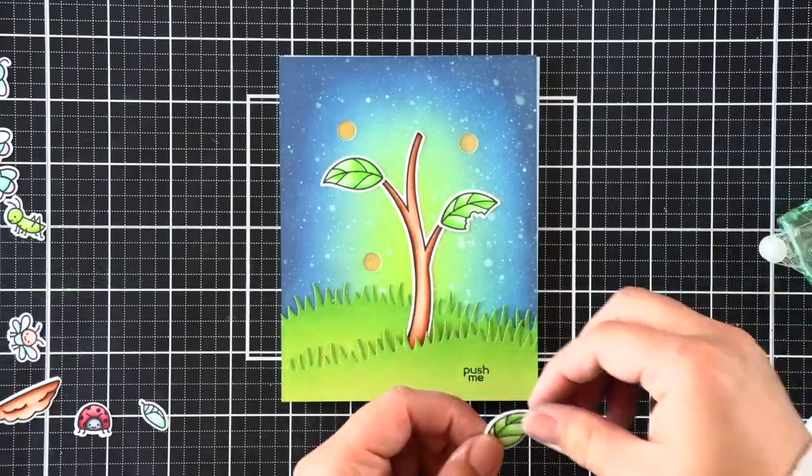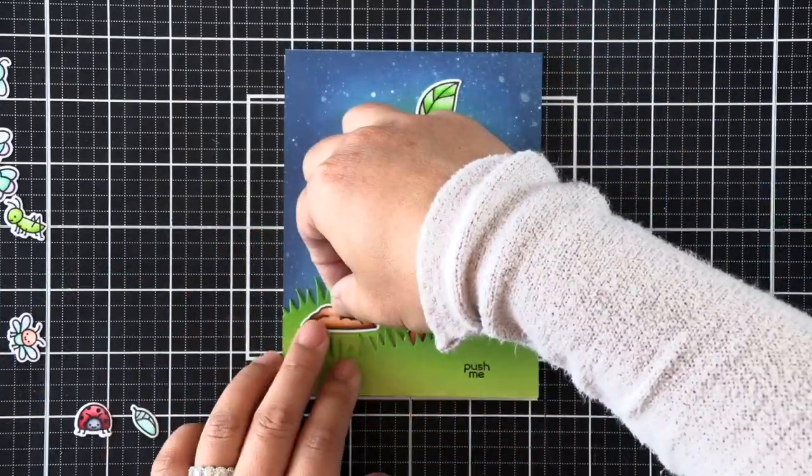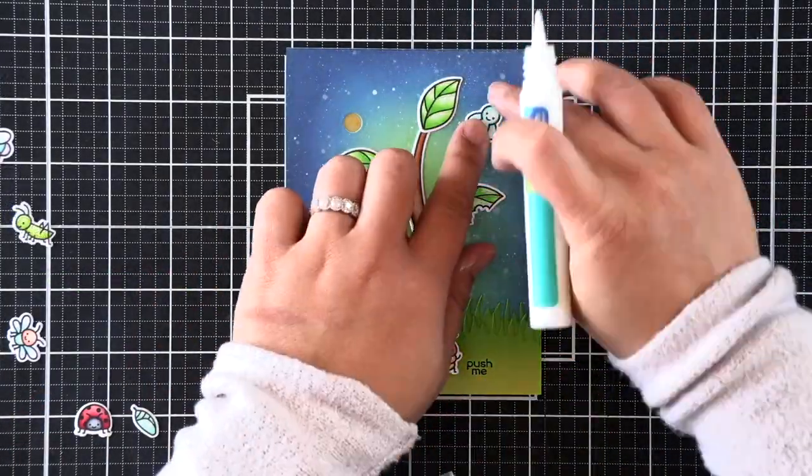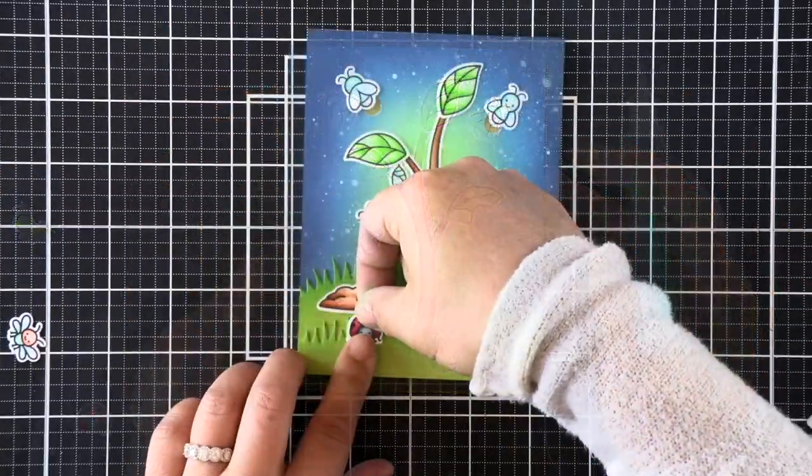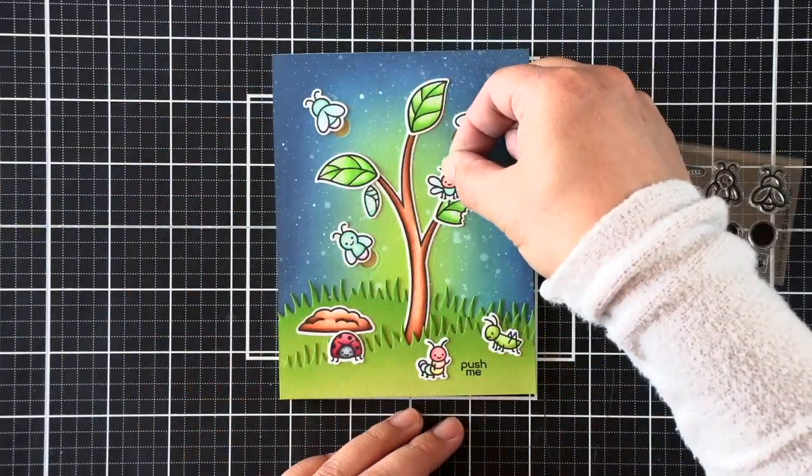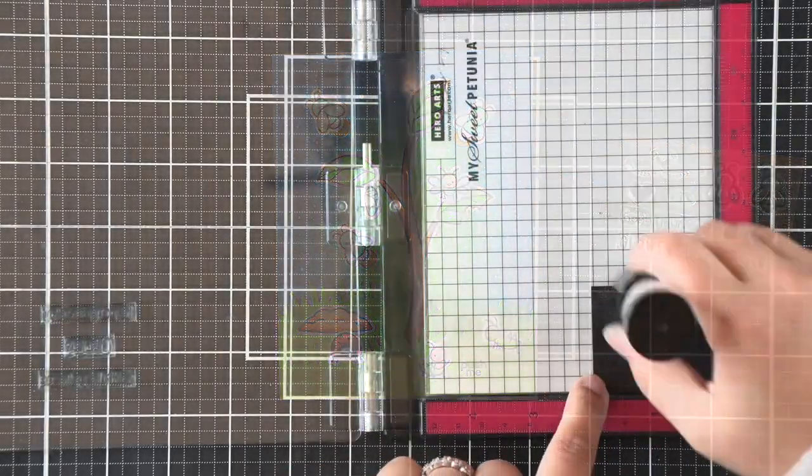Now I'm going to start building my scene with all of the images that we colored at the beginning of this video. I'm attaching everything with some liquid adhesive and attaching those lightning bugs right over those little circle windows that we created.